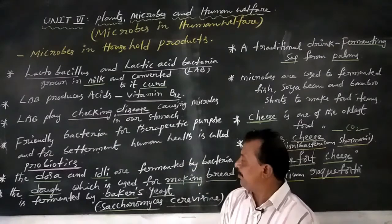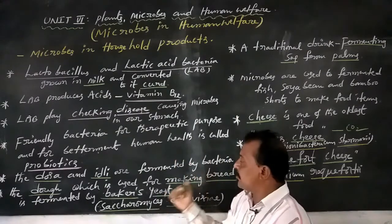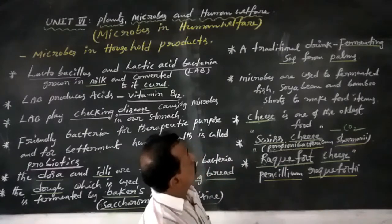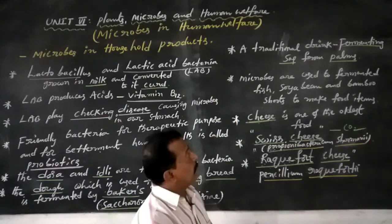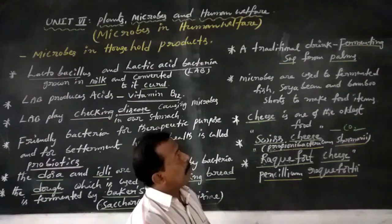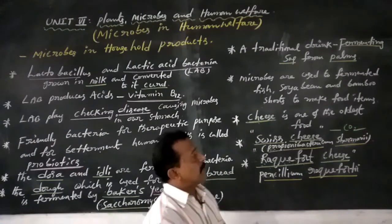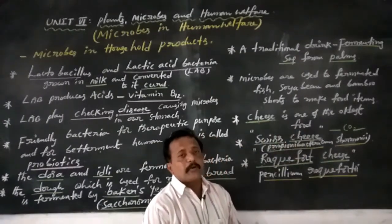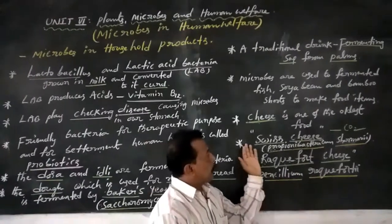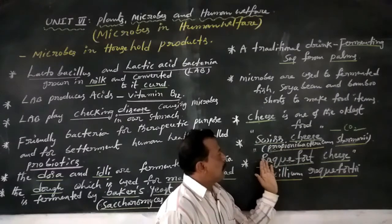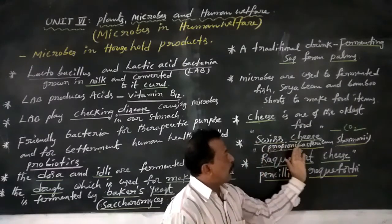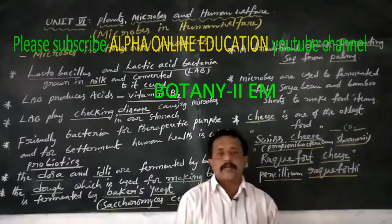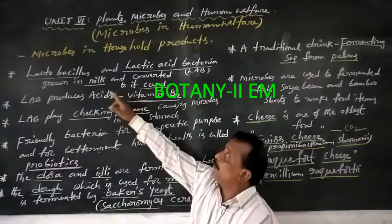In summary, very useful microbes are nowadays utilized in household products. LAB produces acids and vitamin B12; milk and curd contain vitamin B12. Dosa and idli are fermented by bacteria, and making bread involves yeast — Saccharomyces cerevisiae. Toddy is a traditional drink from palm plants. Swiss cheese is produced by Propionibacterium shermanii, and Roquefort cheese is produced by Penicillium roqueforti.